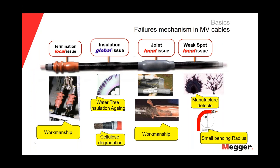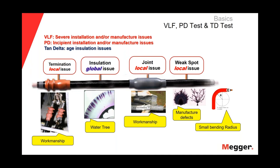In paper-insulated cables, when we have ingress of moisture or water, the water and the cellulose — the water and the paper — are not good partners, so that will start cellulose degradation. Depending on what problem we are dealing with, we can use different methods. If we are looking for severe installation or manufacturing defects, we use the VLF test. For incipient workmanship issues, we use partial discharge. And if we are looking for aging conditions of the insulation, we use the tan delta.